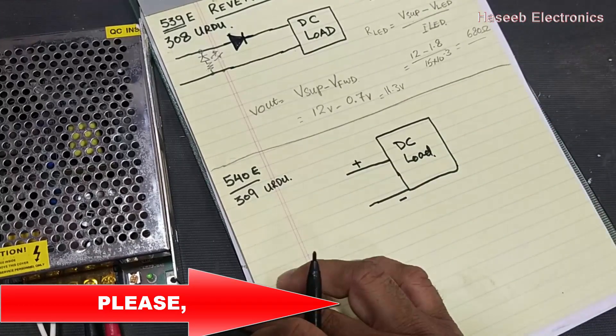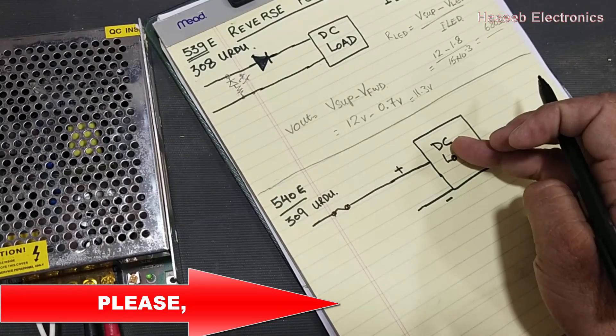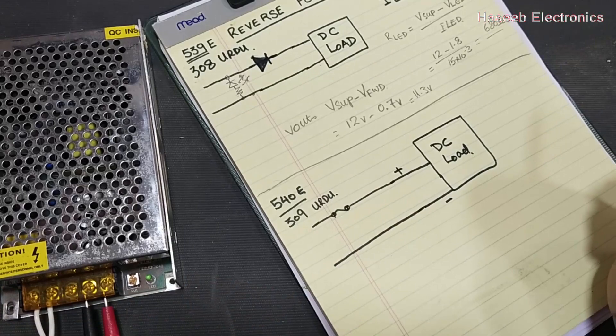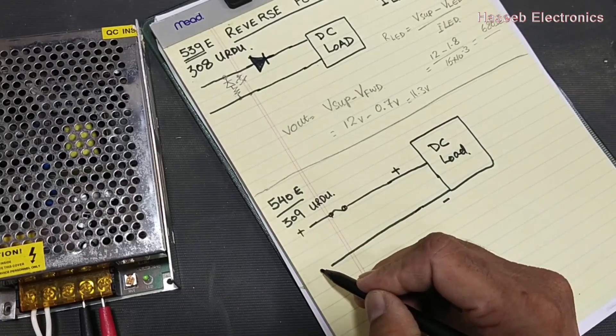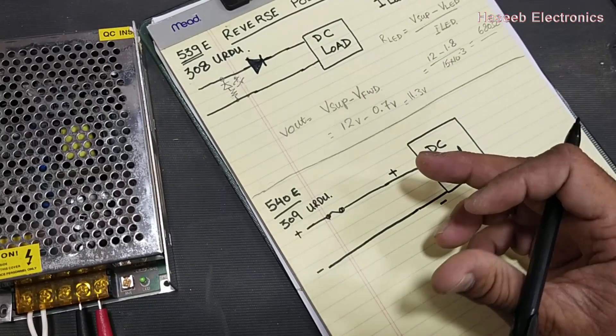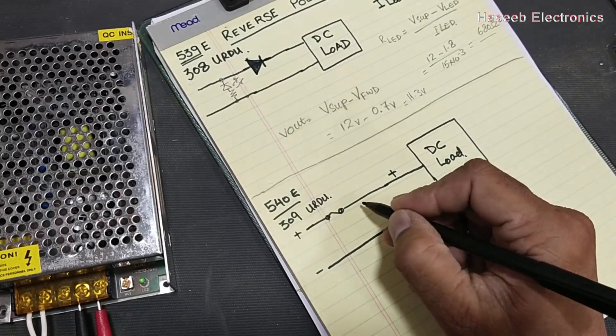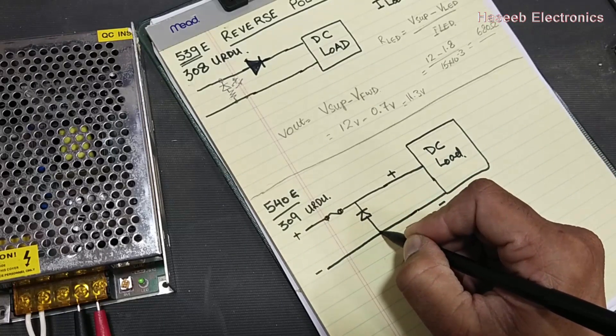But today we will discuss another technique which is used to protect the DC circuit. In this technique, we have a fuse, then it is connected to the circuit. This is the negative line. In this method, positive voltage is applied here, negative voltage applied here, it will drive the load.